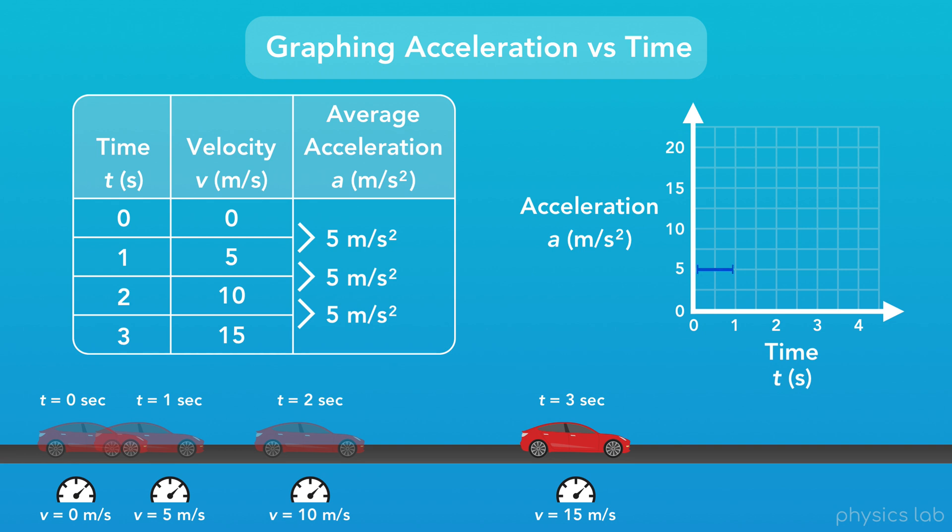For the period of 0 to 1 seconds, we know the acceleration is 5 meters per second squared. From 1 to 2 seconds, it's 5 again. And from 2 to 3 seconds, it's still 5. And there we go. We have a graph of the car's acceleration over time.